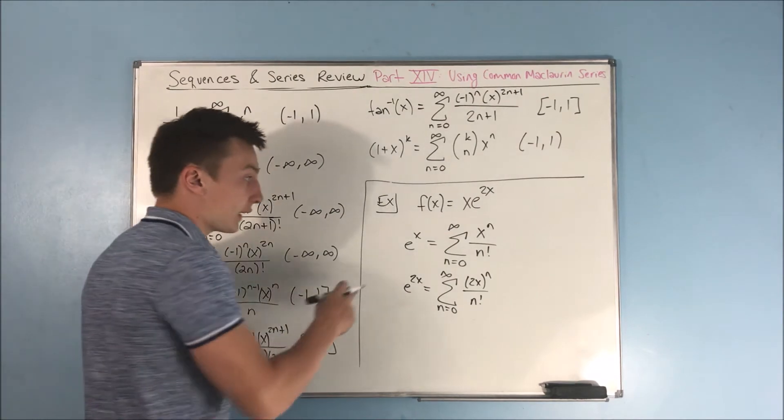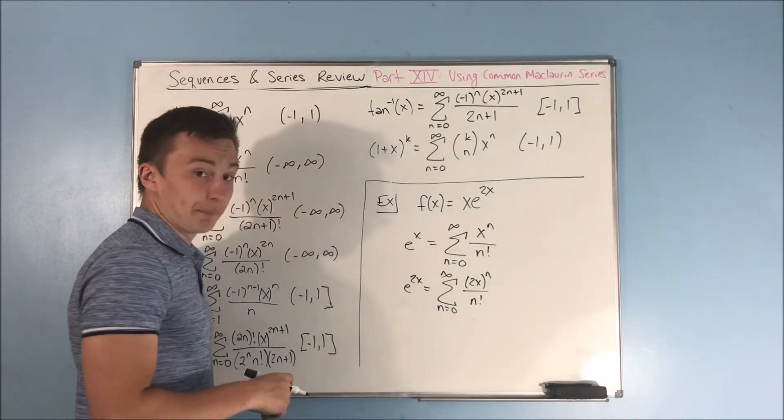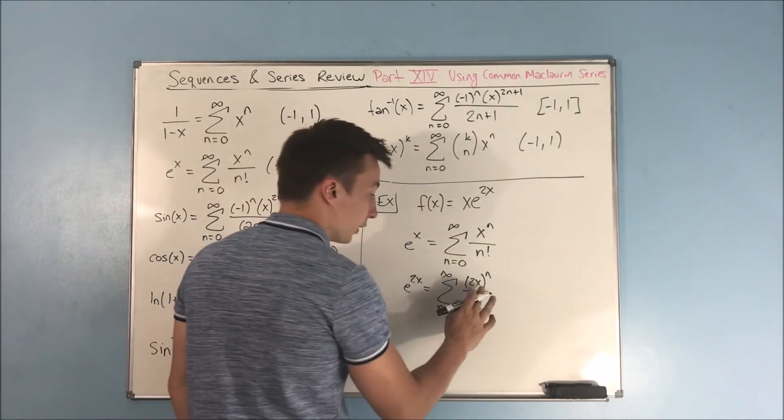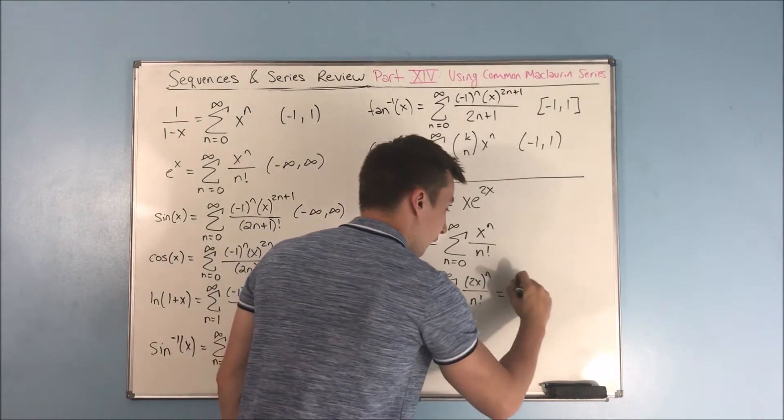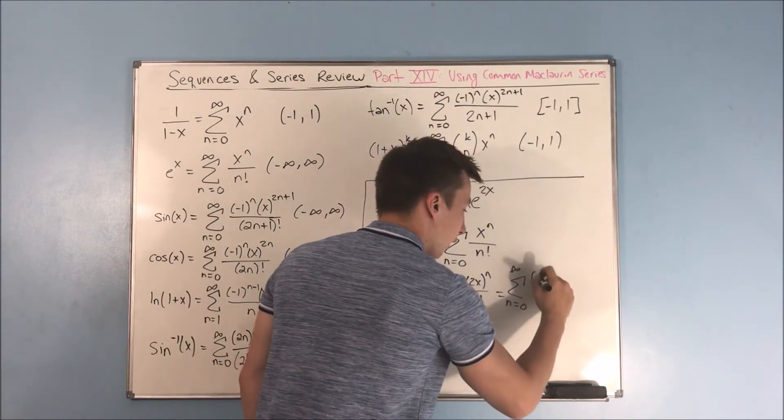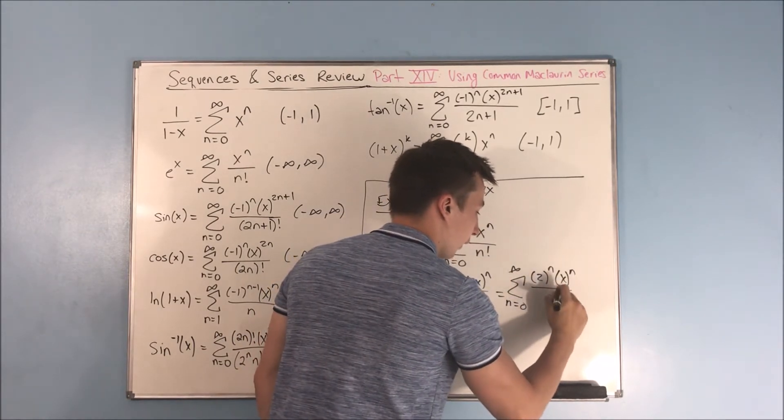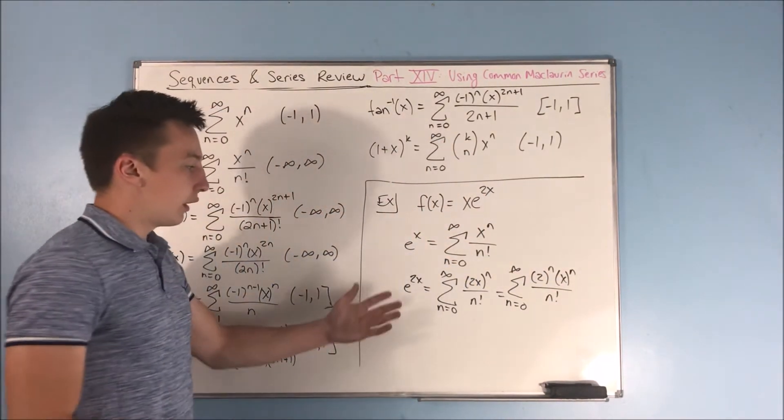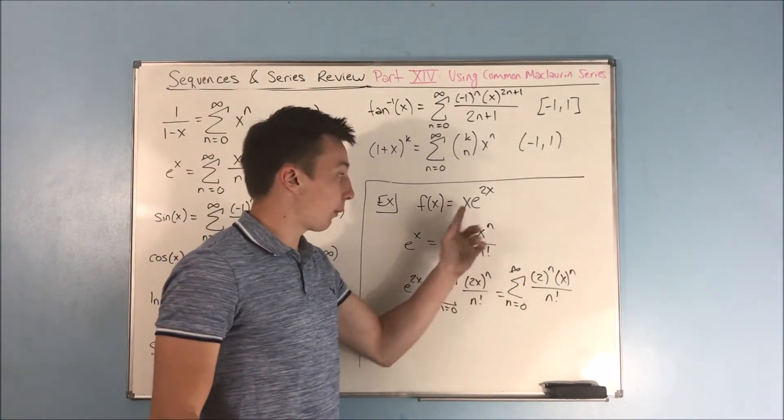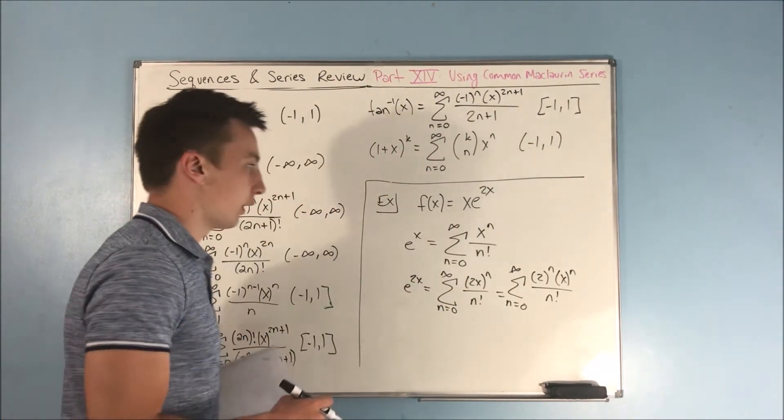So we have the sum from n equals 0 to infinity of 2x to the n over n factorial. Now, for our next step, we're going to be multiplying an x through. So it would actually be a little bit nicer to write this as the sum from n equals 0 to infinity of 2 to the n times x to the n over n factorial.